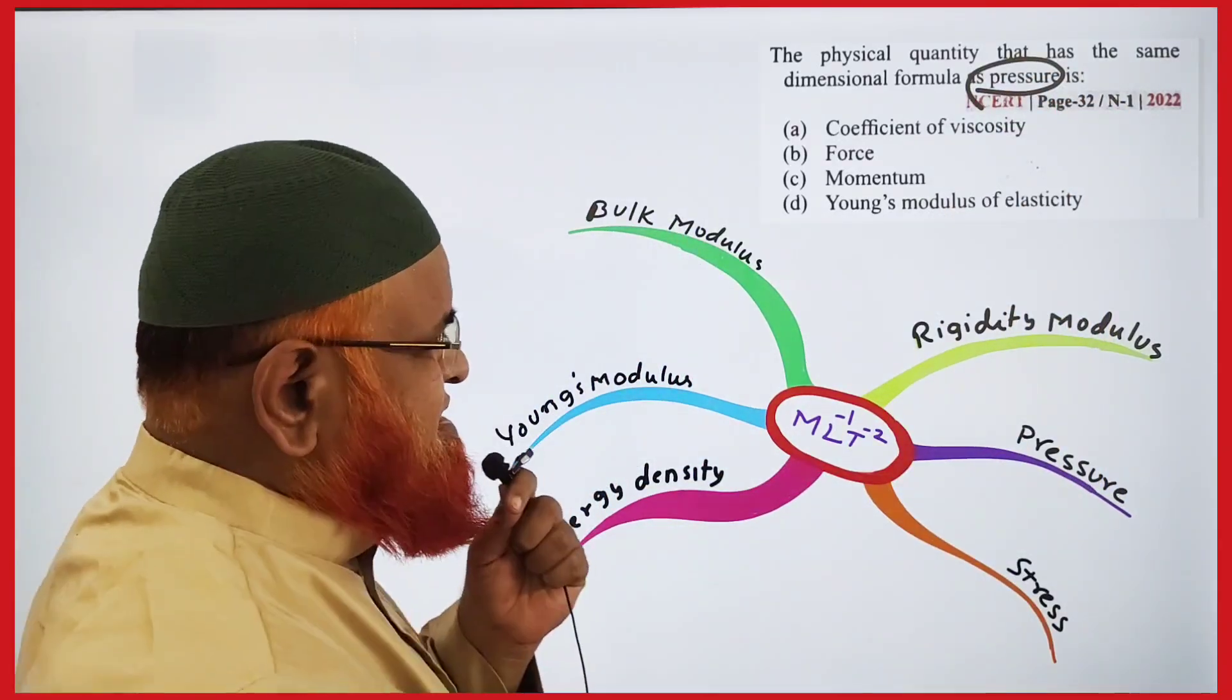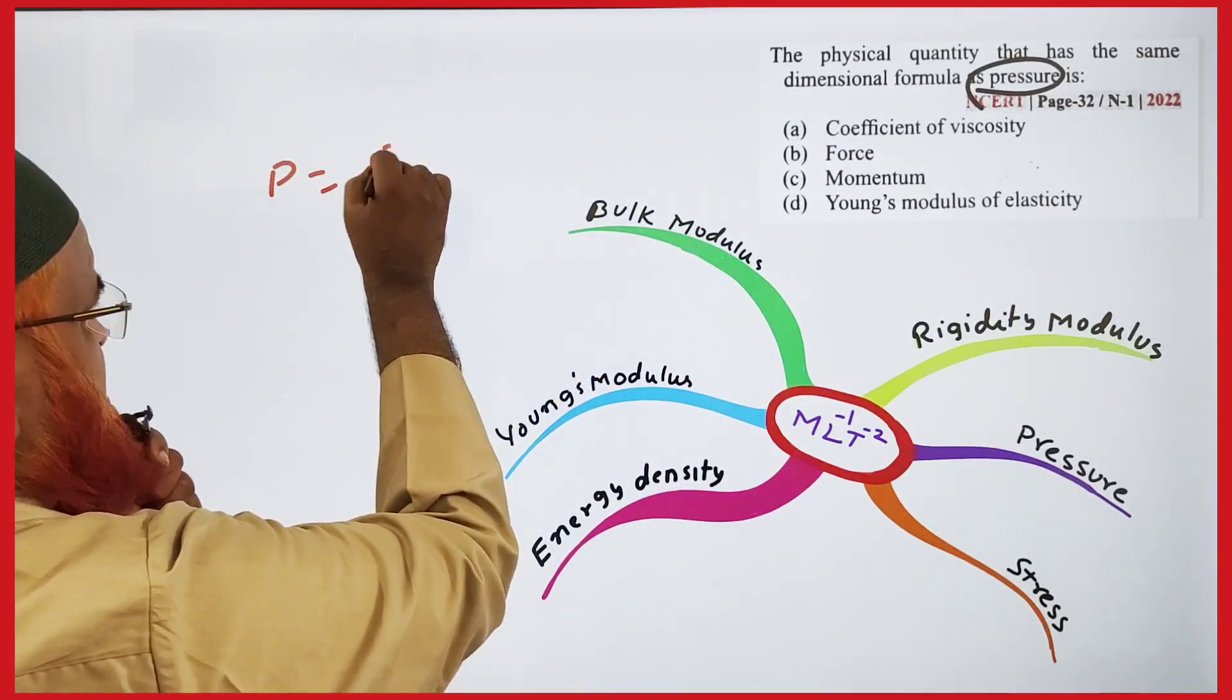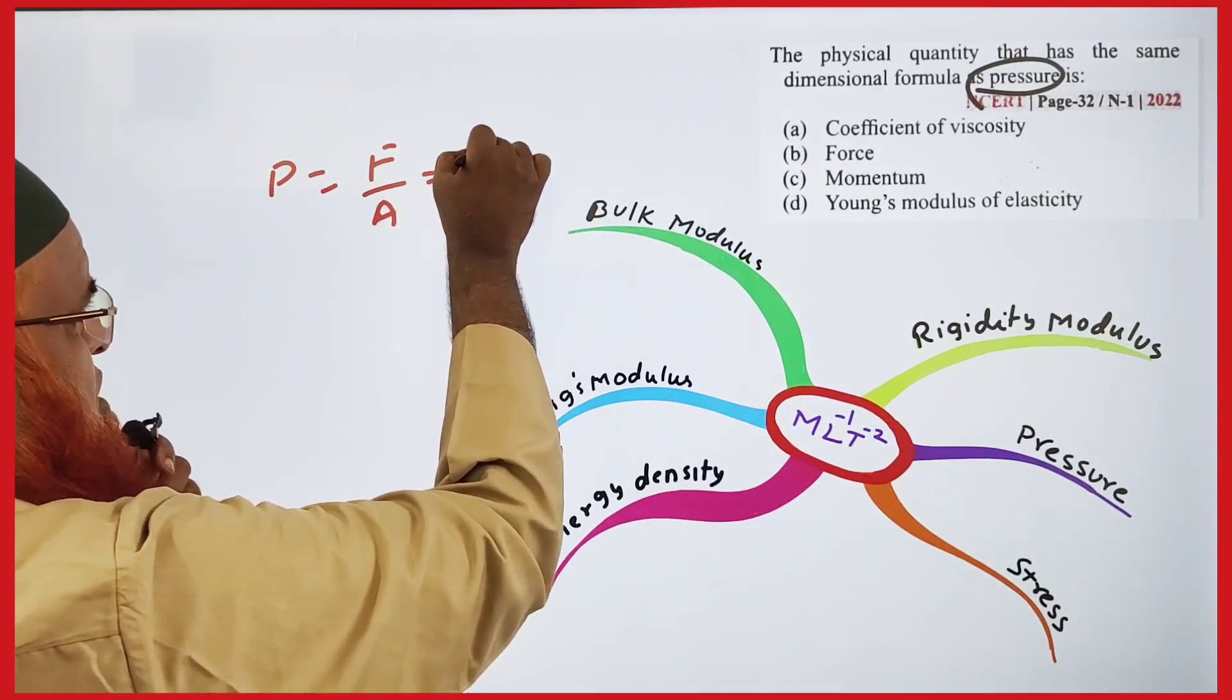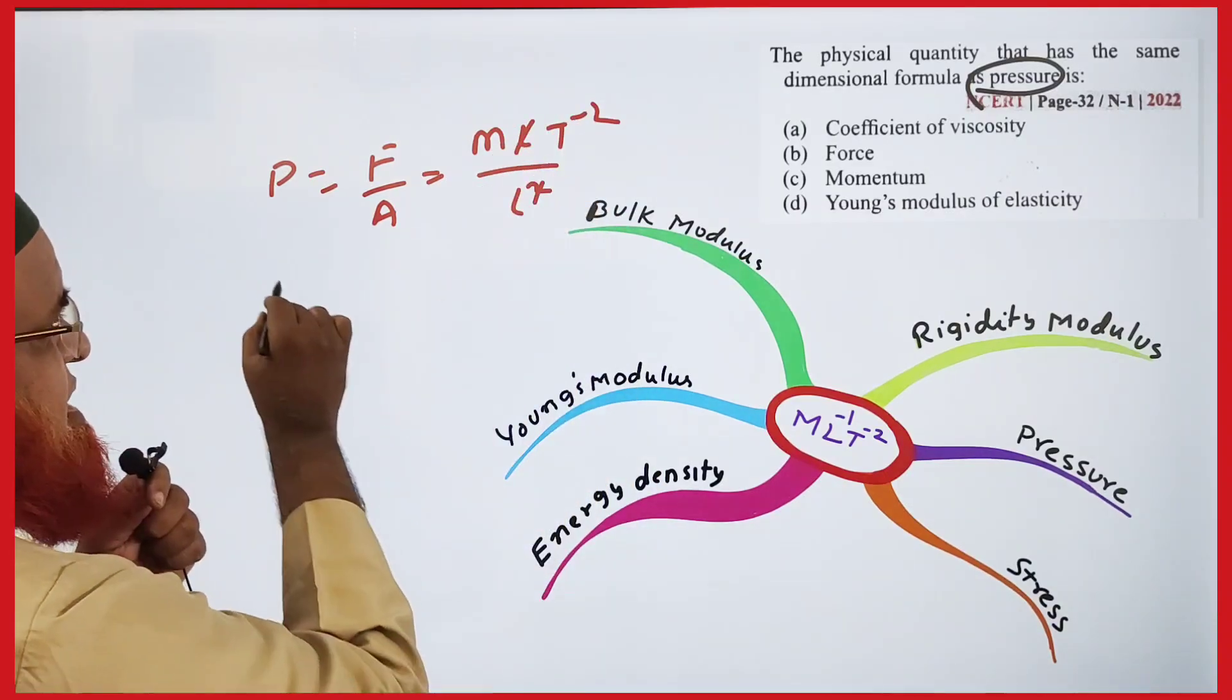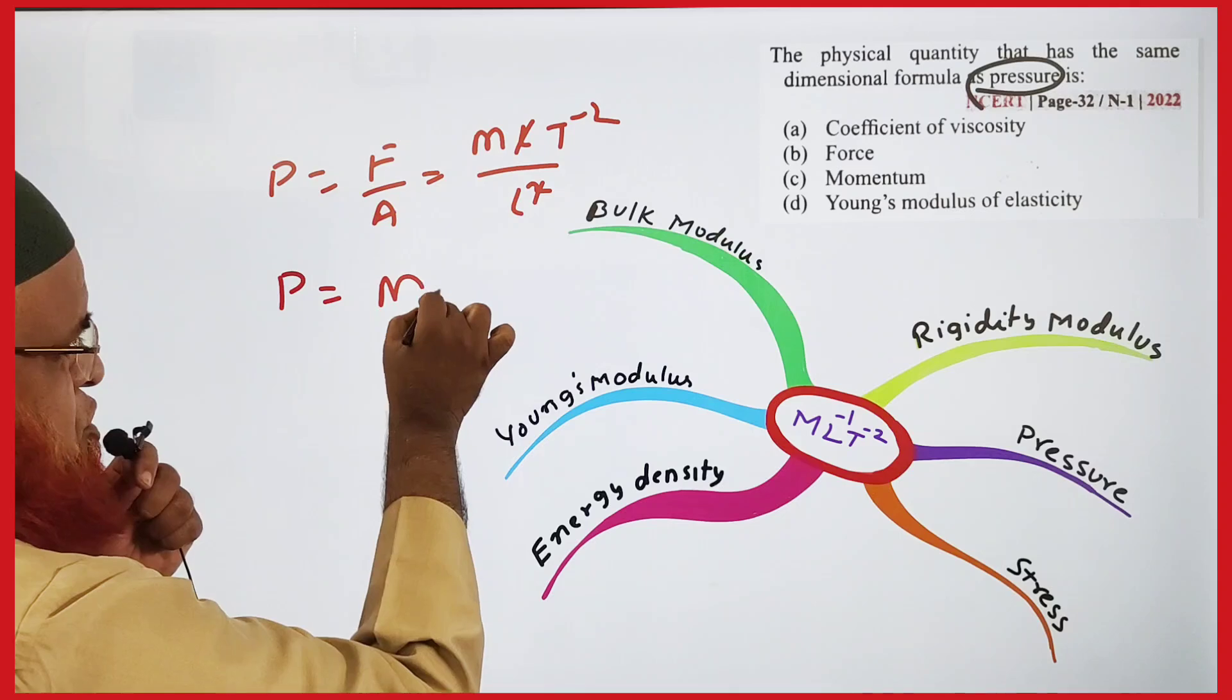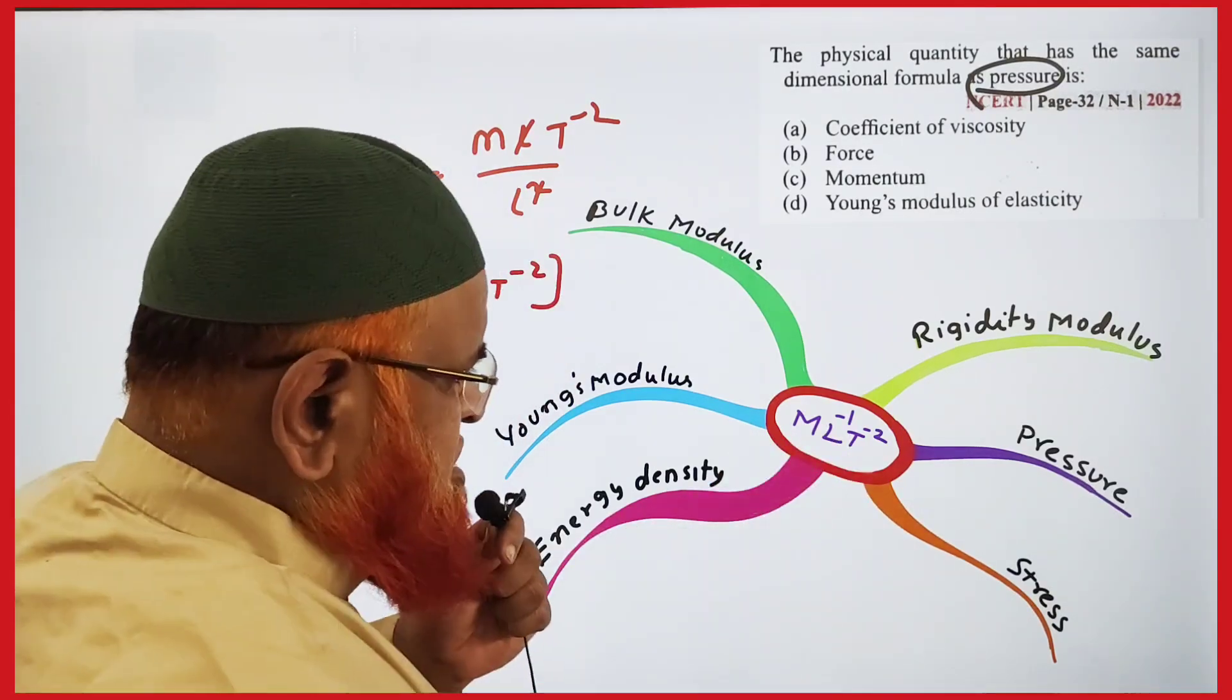If you see here, what is pressure actually? Pressure is force divided by area. Force is mLT^-2, area is L^2. The L's cancel, so the pressure formula is ML^-1T^-2. So this is the pressure formula.